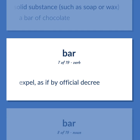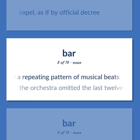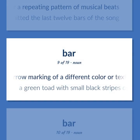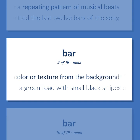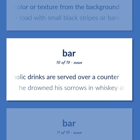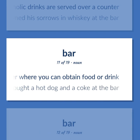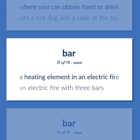Musical notation for a repeating pattern of musical beats. The orchestra omitted the last twelve bars of the song. A narrow marking of a different color or texture from the background. A green toad with small black stripes or bars. A room or establishment where alcoholic drinks are served over a counter. He drowned his sorrows in whiskey at the bar. A counter where you can obtain food or drink. He bought a hot dog and a Coke at the bar. A heating element in an electric fire. An electric fire with three bars.